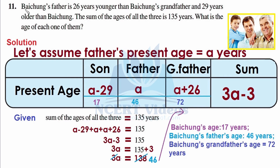Because every statement is given in terms of Baichung's father, let's assume his age to be 'a' years — 'a' representing age, its initial letter, used as our variable. We have represented this in tabular form with four columns: son (Baichung), father (Baichung's father), grandfather (Baichung's grandfather), and their sum. We are talking about present ages; this is not a ratio problem, so no factor is needed.